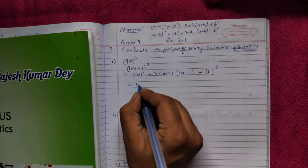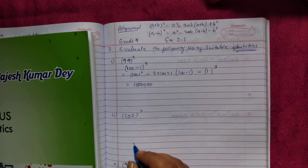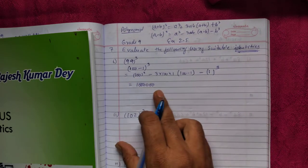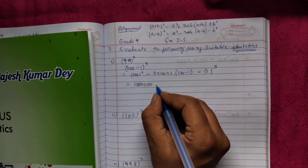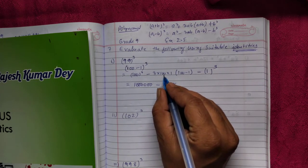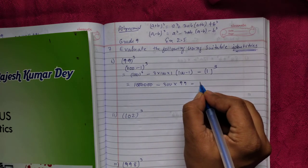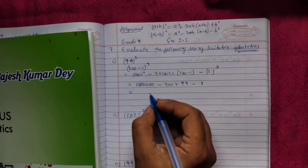Now 100 cube, if you do, you'll get 1 followed by 6 zeros. Minus 300 - see, 3 into 100 is 300, into 1 is also 300 - if you minus you'll get 99, minus 1 cube is 1. So how much you'll get?